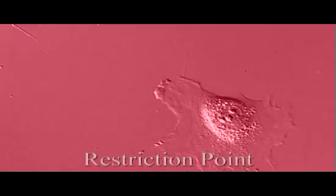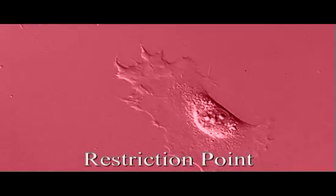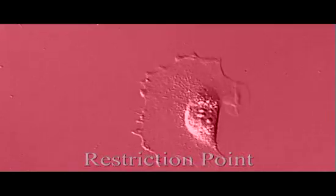Later in the G1 phase, at a time referred to as the restriction point, cells undergo an internal evaluation of their ability to complete the cell cycle and produce two viable daughter cells. If the evaluation is negative, the cell does not go on to the mitosis phase, but rather exits the cell cycle to enter a non-dividing state called the G0 phase.